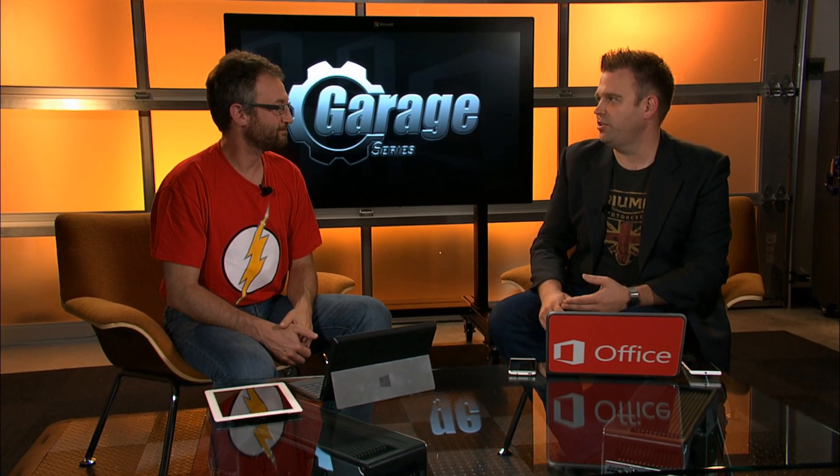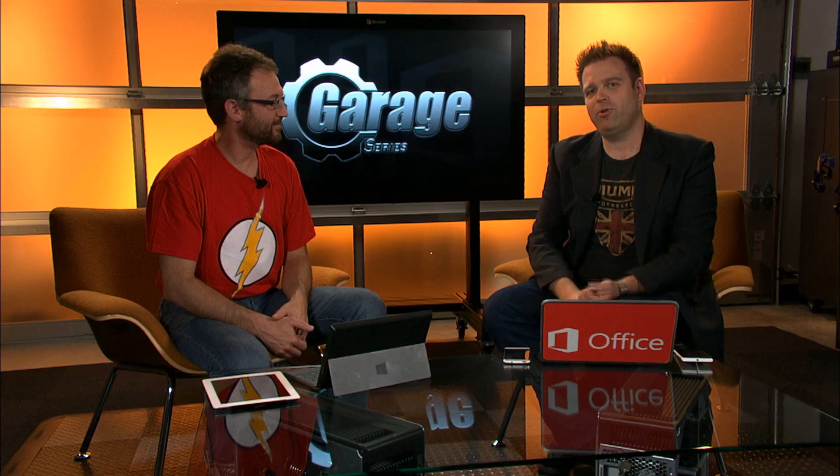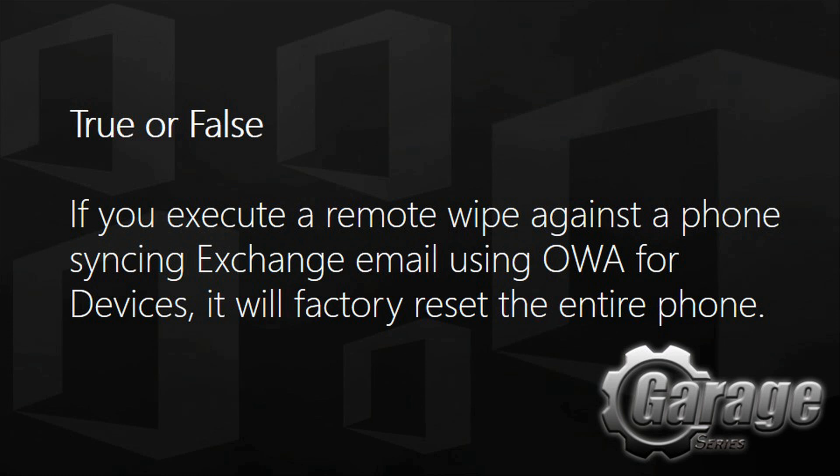So lots of great new technologies, lots of old tried-and-true tools, and directionally going to that kind of selective wipe environment. Before we end this show, let's have a look at today's trivia answer. True or false: if you execute a remote wipe against a phone syncing Exchange email using OWA for devices, it will factory reset the entire phone. The answer to the trivia question was false — we do not wipe all of the contents on the device and reset it. Now that we don't have to wipe the full thing, you get to keep what you don't want to wipe, but absolutely wipe what needs to be wiped. And on a related note, no children's photos were harmed during the filming of this episode.